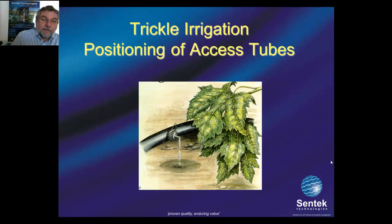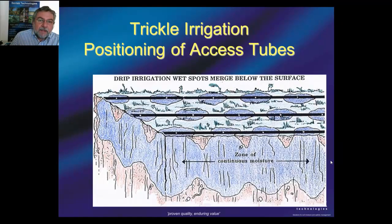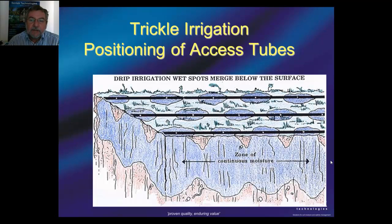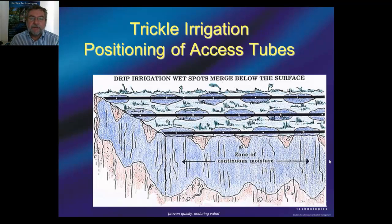Talking about drip irrigation, drip poses a particular challenge because the development of wetting patterns depends on quite a number of factors: emitter spacing, the discharge rate of emitters, the placement of the emitters above or below ground, the irrigation frequency and amount, crop extraction pattern, and obviously soil hydraulic attributes.